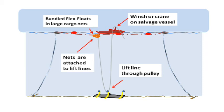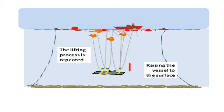Winching the lines up pulls the nets under water to a depth of between 5 and 10 meters. After winching, the lift lines are attached to the support cables and the lifting process is repeated until the vessel is raised to the surface.